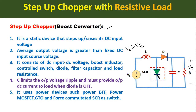The circuit consists of a DC input voltage, a boost inductor L, a controlled switch which is an SCR, a diode D, a filter capacitor C, and a load resistance. The filter capacitor limits the output voltage ripple and provides the output DC current to the load when diode D is off. In place of the SCR, this step-up chopper can use power devices such as a power BJT, power MOSFET, GTO, or force-commutated thyristor as the switch.